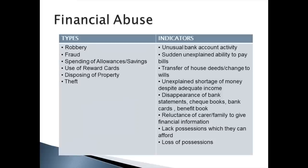Further financial abuse indicators include disappearance of bank statements, chequebooks, bank cards, and benefit books. Reluctance on the part of a carer or family member to give financial information, lack of possessions which you know they can afford, and loss of possessions.